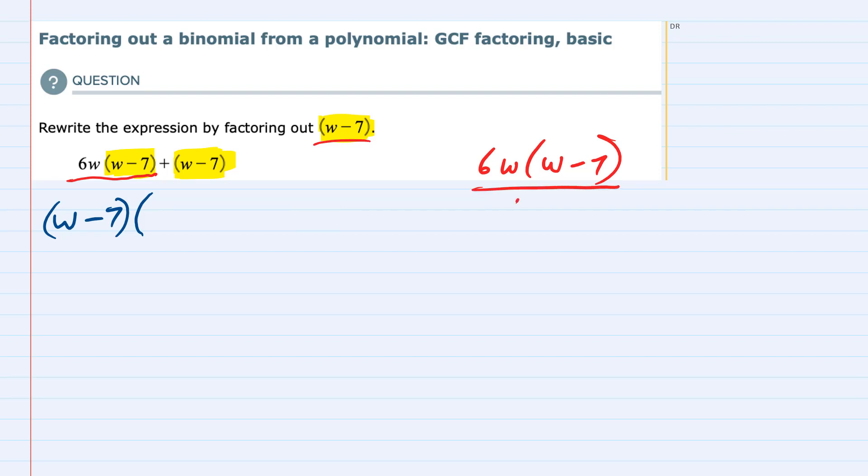Doing so means that those (w - 7)s cancel. So I would be left with 6w in the first term.